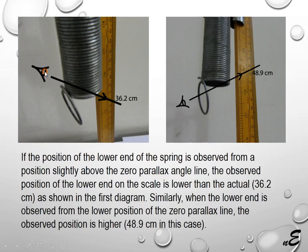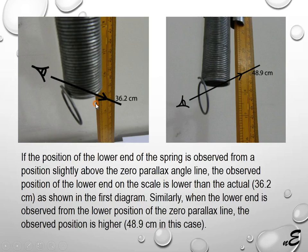If the observer looks from a point above the zero parallax line, the reading is much less than the actual one, which is 36.2 centimeter. If the observer's eye is below the zero parallax line, the reading is higher — 48.9 centimeter. Readings taken from above or below this position will give a parallax error.